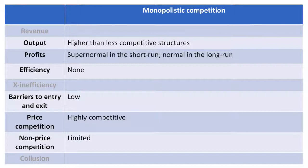In monopolistic competition, output is likely to be higher than in less competitive markets. Profits are possibly supernormal in the short run and normal in the long run. Since price is above marginal cost and firms do not produce at their lowest level of average cost, there is no productive or allocative efficiency achieved. There are very low barriers to entry and exit, so entering and leaving the market is relatively easy. Price competition is high, but firms have some price setting power as they can differentiate their products.